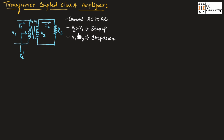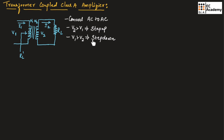Depending upon the voltage across the primary side as well as the secondary side, we can say a transformer is a step-up transformer or a step-down transformer. If the voltage across the secondary is more compared to the voltage across the primary, such a transformer is known as a step-up transformer. And if the voltage across the primary is more compared to the secondary, then such a transformer is known as a step-down transformer.